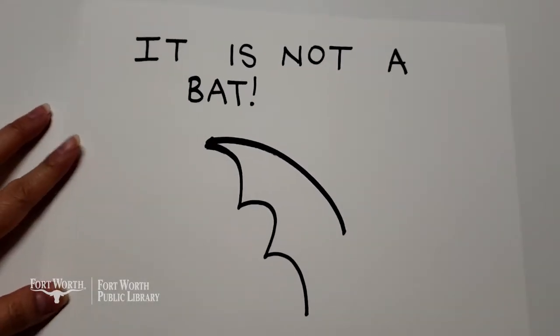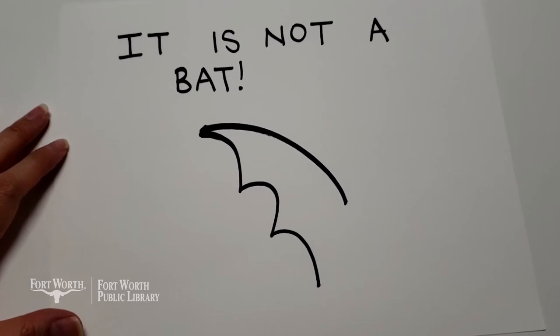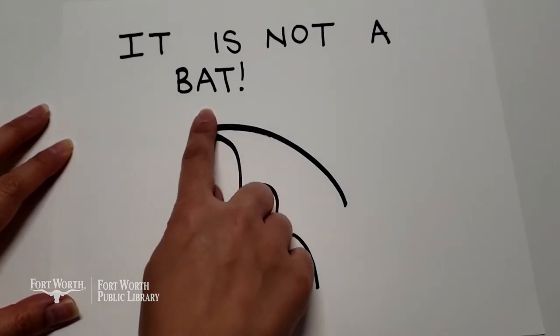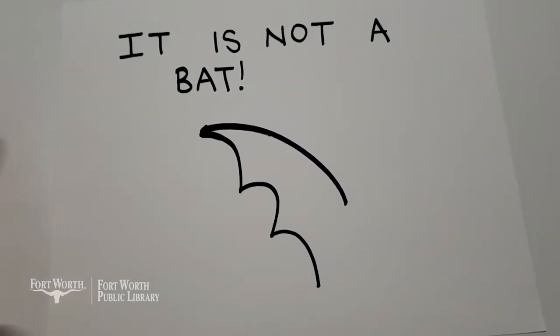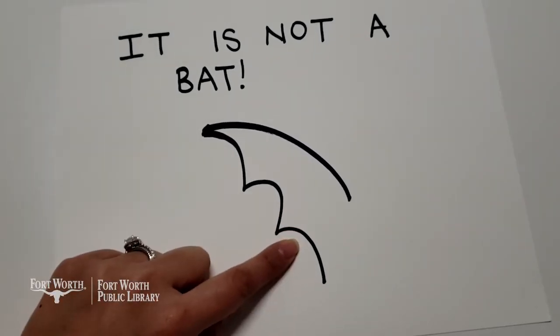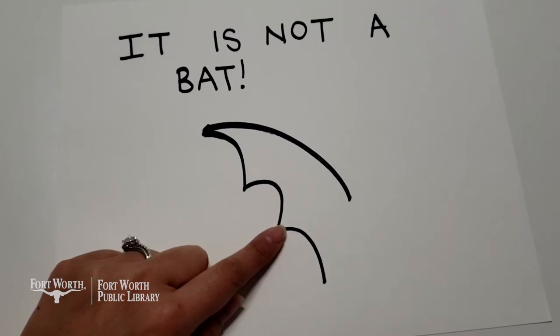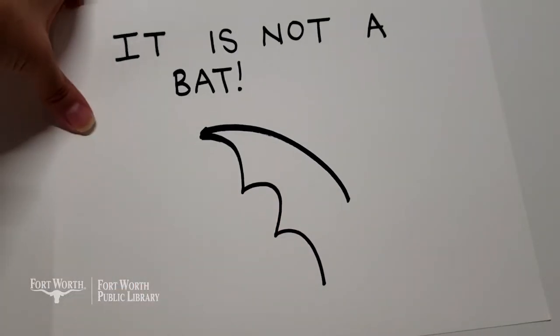It is not a bat. Okay, so as you can see we have a curve and three bumps. So you at home can go ahead and draw that shape and challenge your friends or family to finish it in whatever way that they feel is fit.